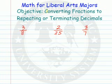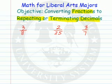In this video, we're going to convert fractions to decimals. The decimals are either going to be repeating decimals — some block of digits that repeat over and over again — or they're going to terminate, which means eventually everything becomes zeros.